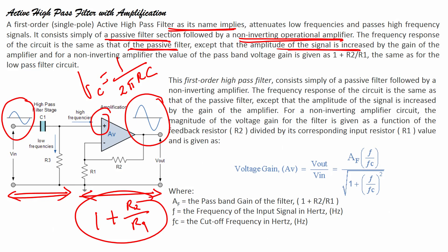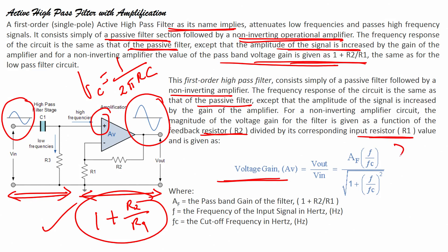For a non-inverting amplifier, the pass band voltage gain is 1 + R2/R1, the same as for the low pass filter. The first order high pass filter consists of a passive filter followed by a non-inverting amplifier. The voltage gain for the filter is a function of the feedback resistor R2 divided by R1, and equals AF multiplied by (f/FC) divided by the square root of (1 + (f/FC)²).